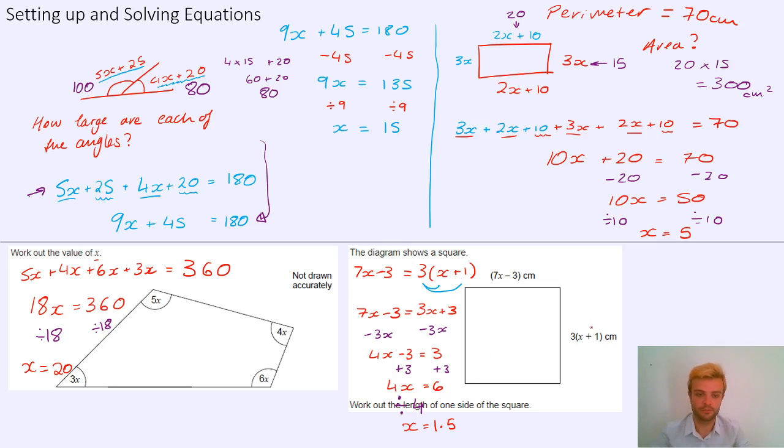And if I know what x is, then I can substitute it into either of these expressions to work out how long each side of the square would be. Because it's a square, all the sides are the same, so I only need to substitute it into one of these two. I'm giving the same answer either way. Let's do this one, because this looks a little easier. If x is 1.5, then x plus 1, so this bit inside the brackets, is going to be 2.5. And 3 times 2.5, I'm going to add up 3, 2.5s. 5 plus 5 plus 5 is 15. Carry the 1. 3, 4, 5, 6, 7. So the sides of the square are 7.5 centimeters.